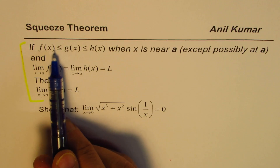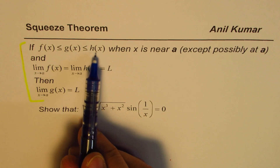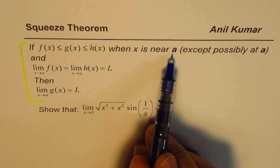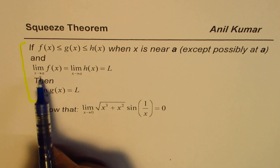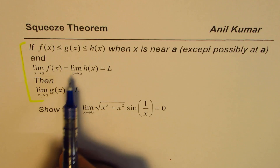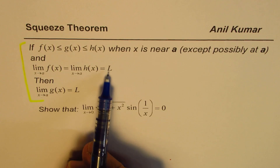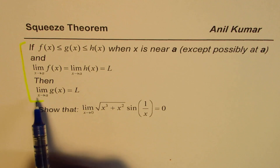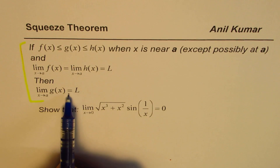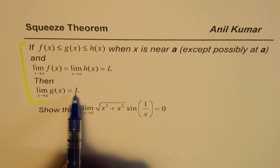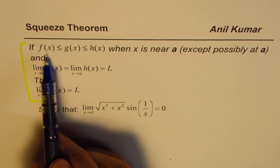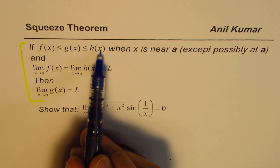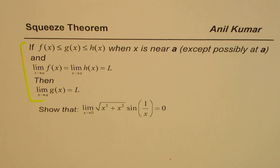In statement we write it like this: if f(x) ≤ g(x) ≤ h(x) when x is near a, except possibly at a — that gives you the concept of limits. And if the limit as x approaches a for f(x) equals the limit for h(x), equal to some real value L, then the limit as x approaches a for g(x) is also L. Basically, the limit of the function squeezed from both sides equals the limits of those two outer functions, when those two are equal.